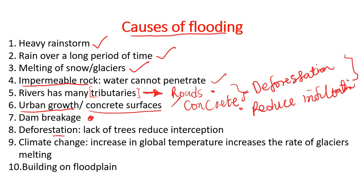Other causes include dam breakage and deforestation — lack of trees reduces interception, meaning water has direct contact with the soil. Climate change and increasing global temperatures increase the rate of glacier melting, which can also cause flooding. Building on flood plains is also a major cause of flooding.